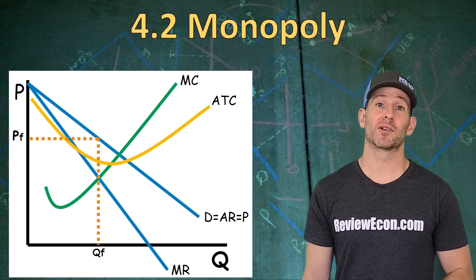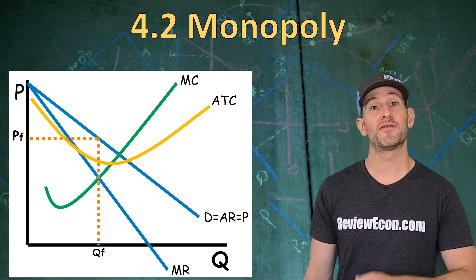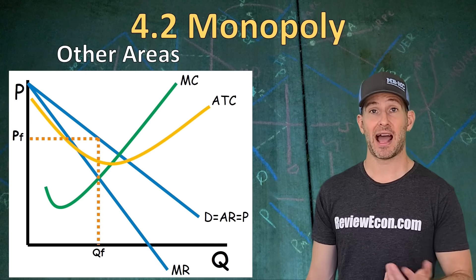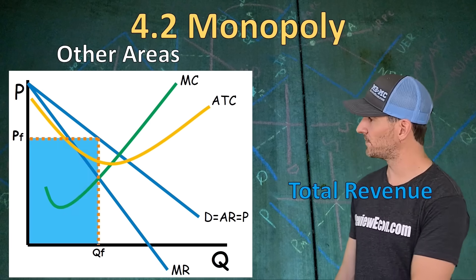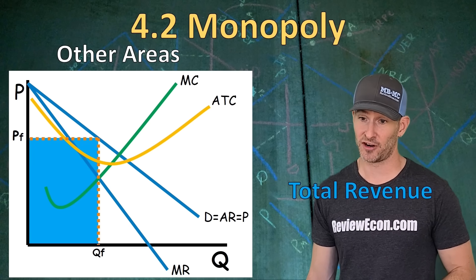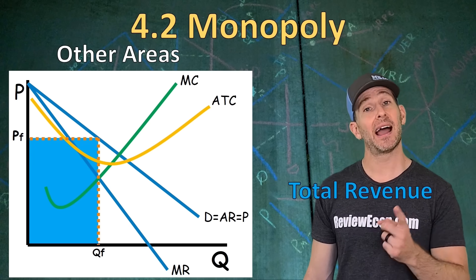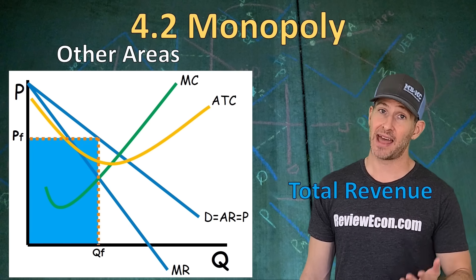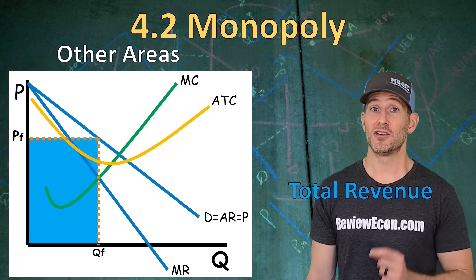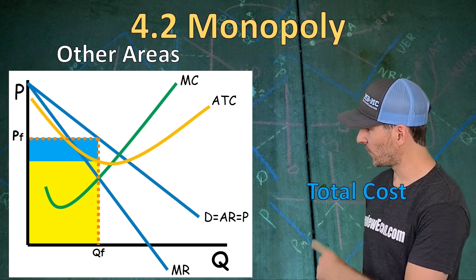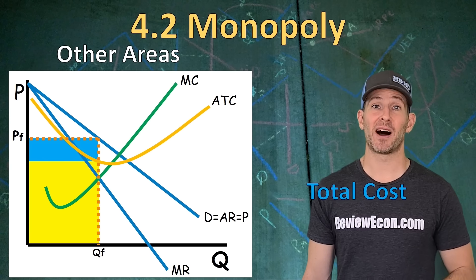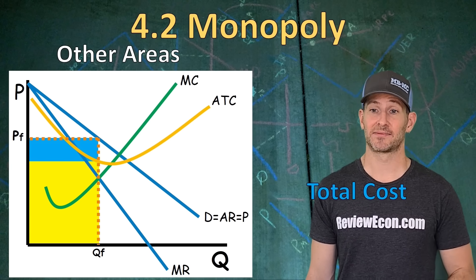Just like in graphs from your last unit, you can find all kinds of areas on this graph. To find total revenue, go up till you hit that demand curve — that's your average revenue curve — and then head over to the price. That box is your total revenue. You can find your total costs by going all the way up to that average total cost curve, and that yellow box is your total cost.